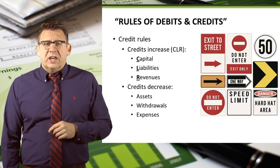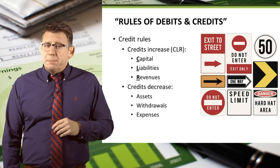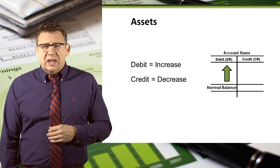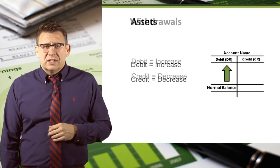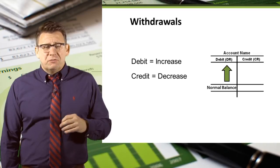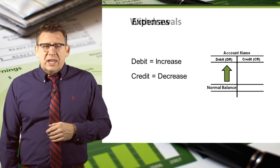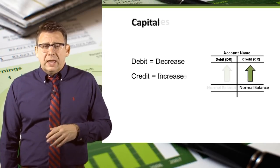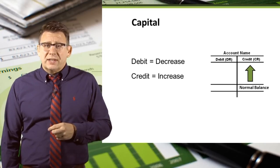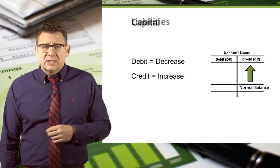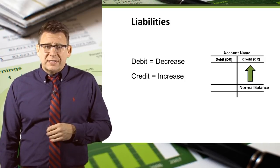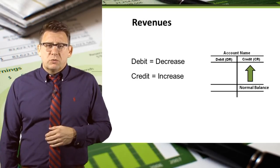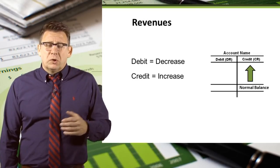Let's conclude this video with a visual recap of the rules of debits and credits. Assets increase with debits and have normal debit balances. Withdrawals increase with debits and have normal debit balances. Expenses increase with debits and have normal debit balances. Capital increases with credits and has normal credit balances. Liabilities increase with credits and have normal credit balances. Revenues increase with credits and have normal credit balances.